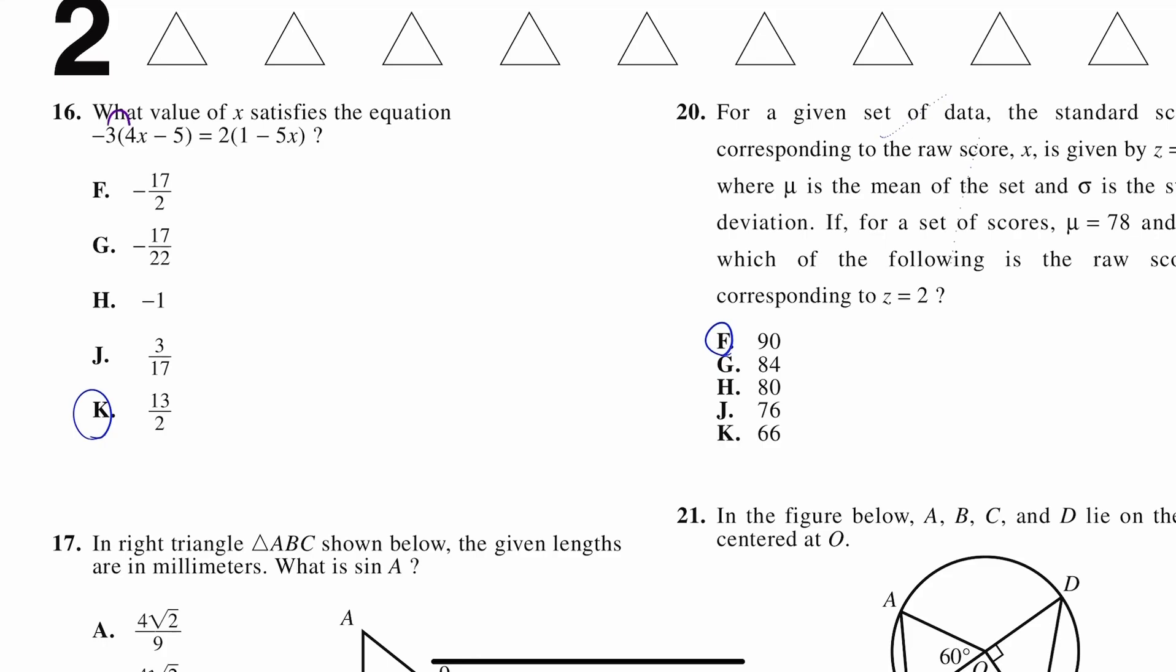Let's go and distribute. Negative 3 times 4x is negative 12x. Negative 3 times negative 5 is positive 15. 2 times 1 is 2. And 2 times negative 5x is negative 10x. Now go ahead and move over your x's to one side and your non-x's to the other. So I'm going to get rid of subtraction with addition and this addition over here with subtraction. So negative 12 plus 10x is negative 2x. These are gone. Equals 2 minus 15 is negative 13. Those are gone. And now divide each side by negative 2. Since they're being multiplied here. x equals negative 13 over negative 2. And we know that a negative divided by a negative is a positive, which gets us answer letter K. 13 over 2.